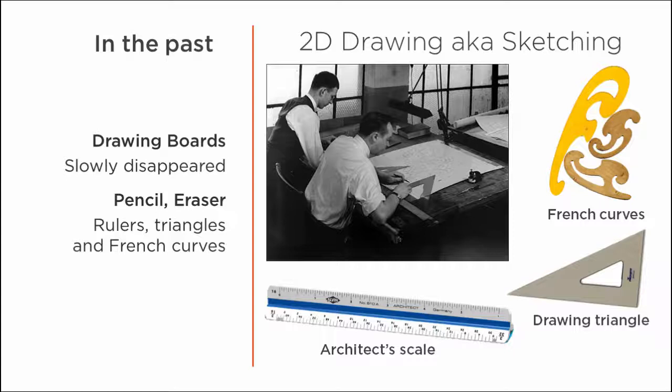Back then, you used various tools such as an architect's scale which had multiple scales for different unit types. You also used the triangle and for more curved lines, you used the French curves. The problem with this old way of creating technical manufacturing drawings was that it was extremely time consuming and it took days to create a full set of construction drawings for a simple product.